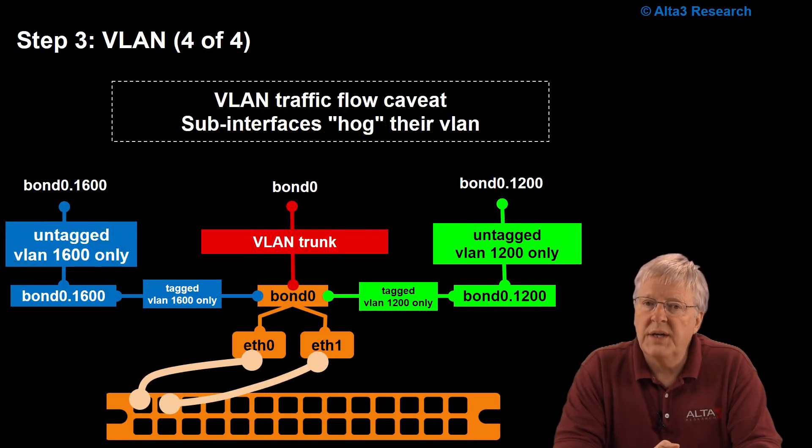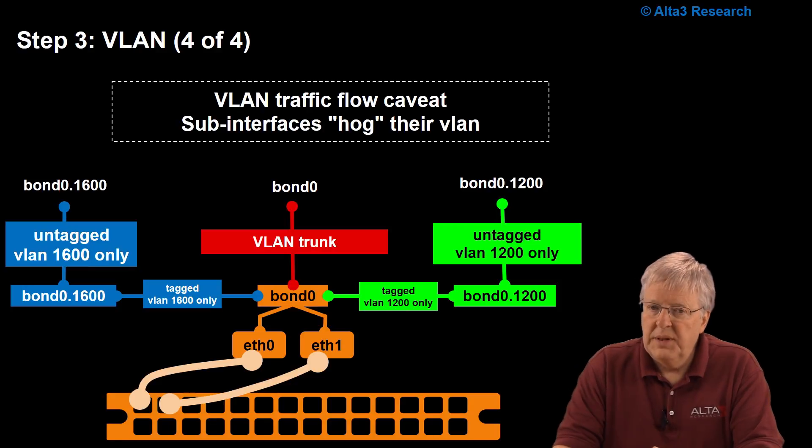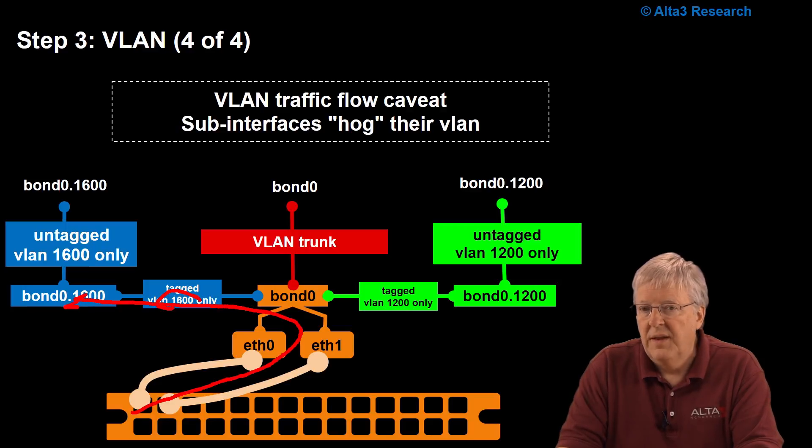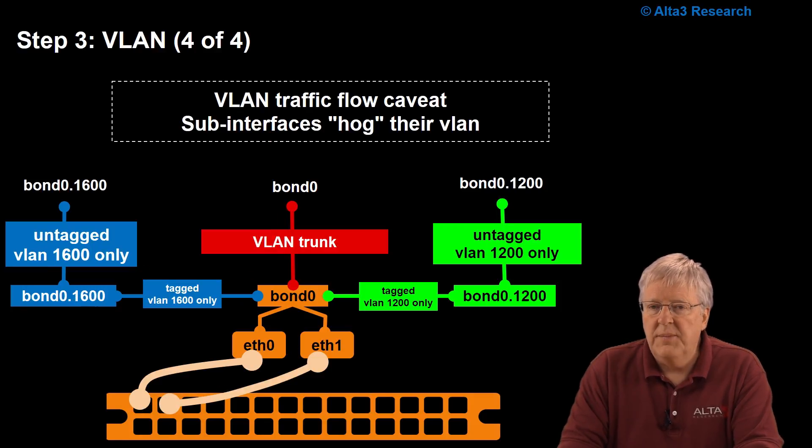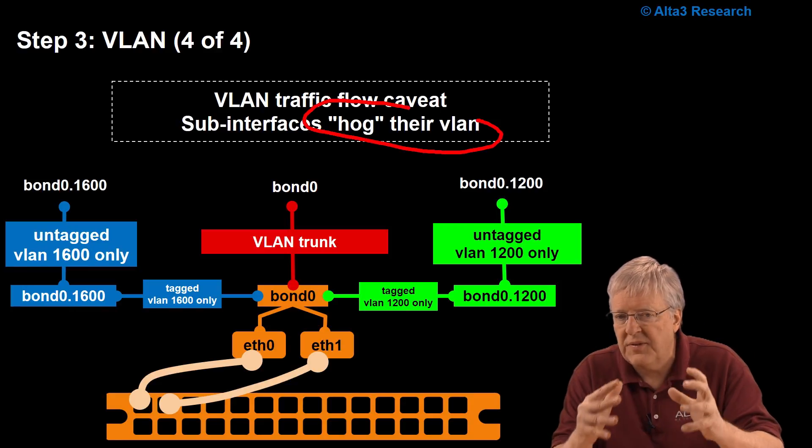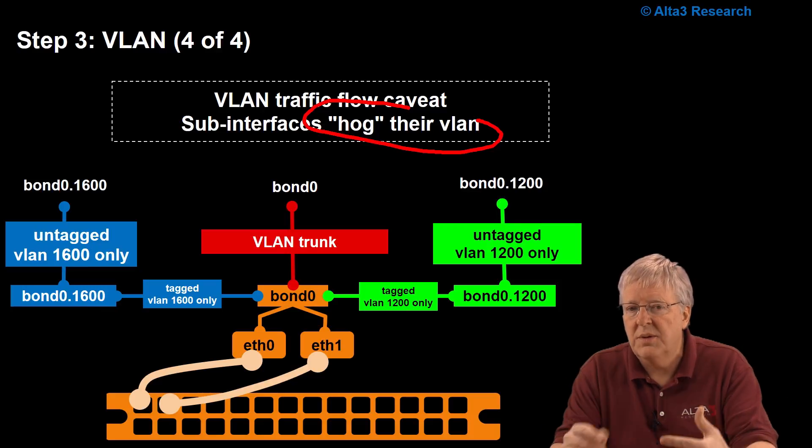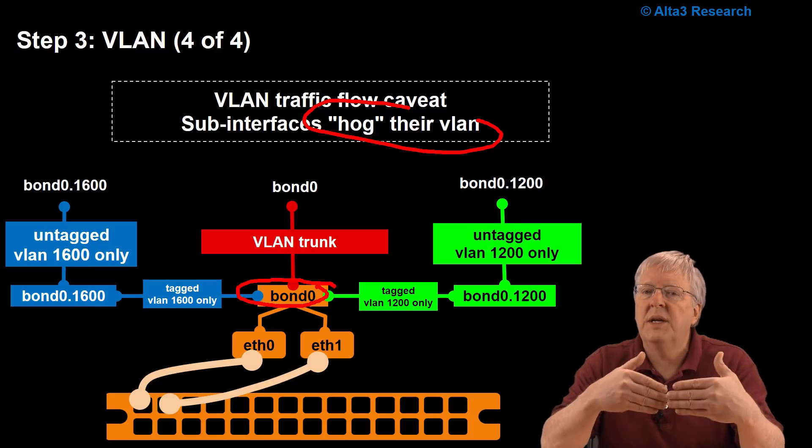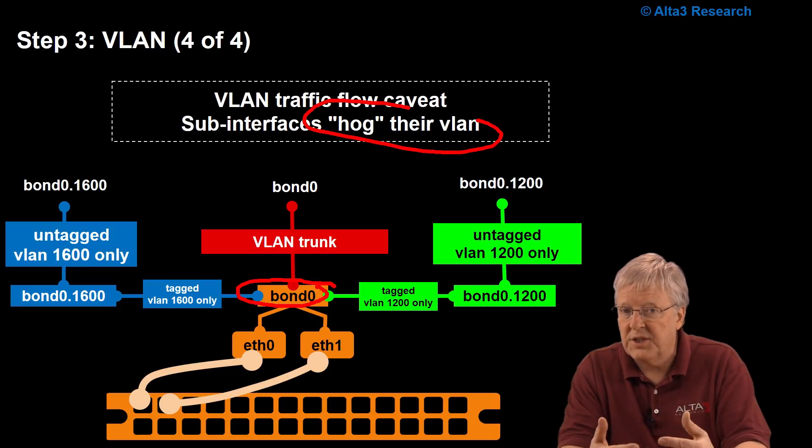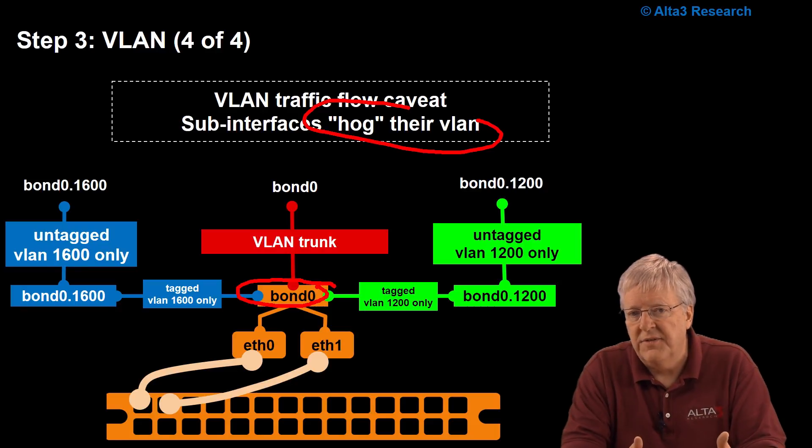Now, a word to the wise on VLAN traffic flow. Please be aware that any traffic for VLAN 1600 is going to go this way. That would even apply that if traffic's coming down, tagged VLAN 1600, it's going to go that way. So, sub-interfaces will hog their VLAN. All you have to do to keep yourself out of trouble, continue to remind yourself that this bond zero interface is the termination of a trunk. It's an interface. It's not a switch. And that takes care of VLAN.